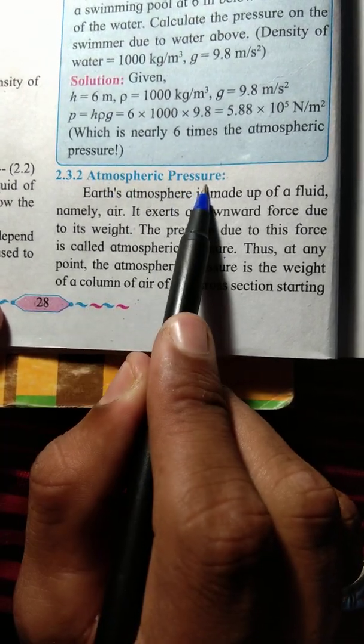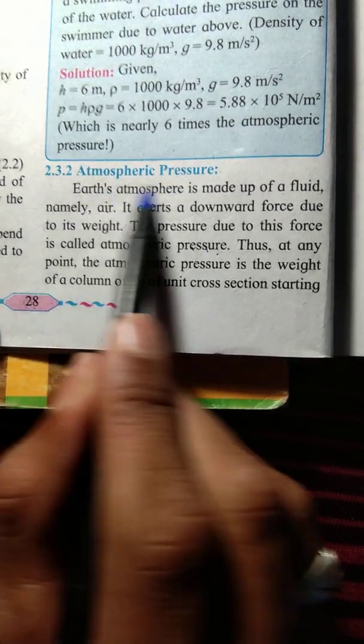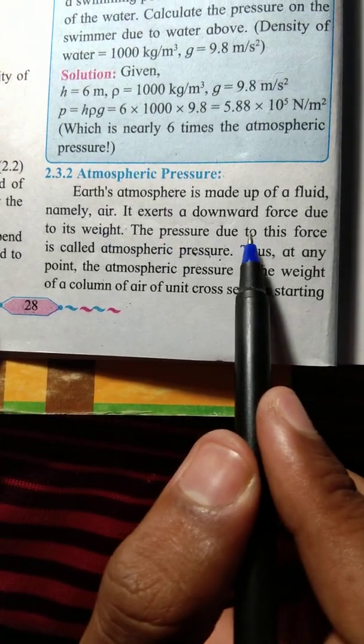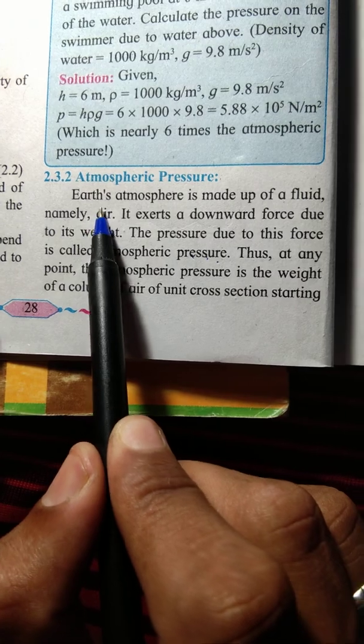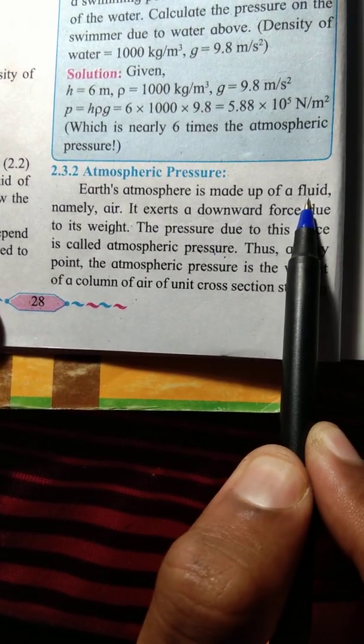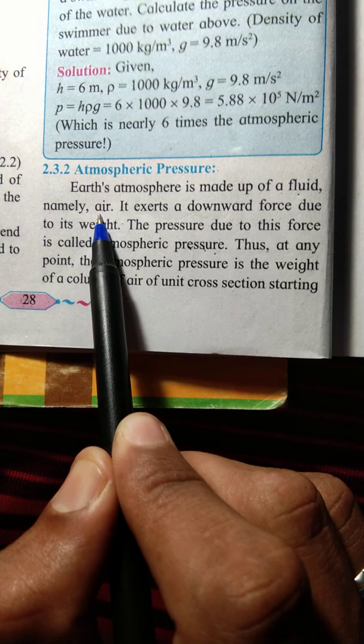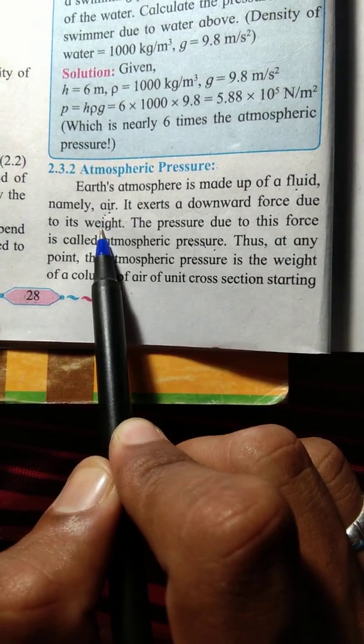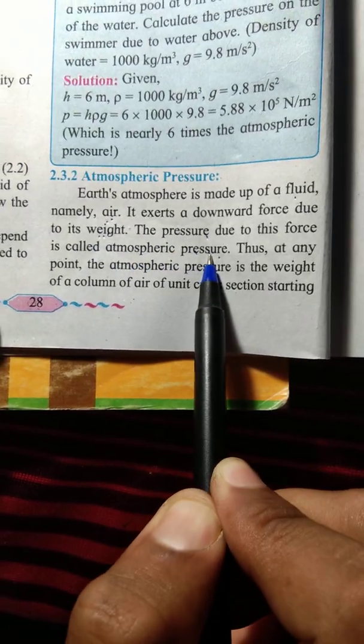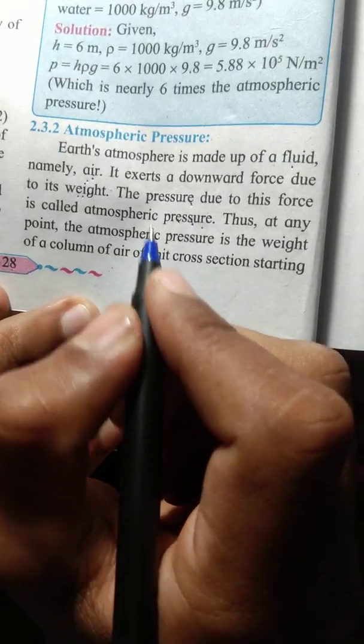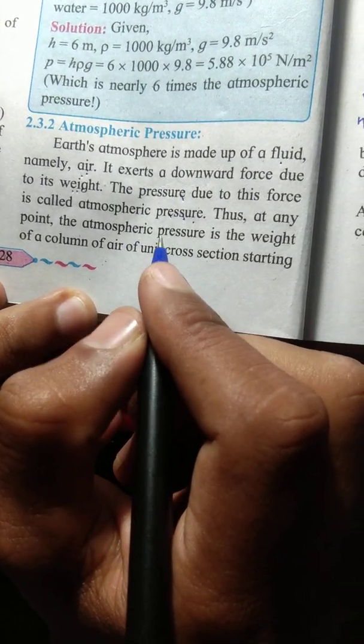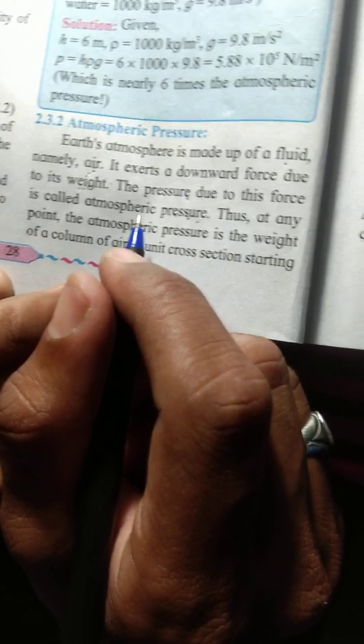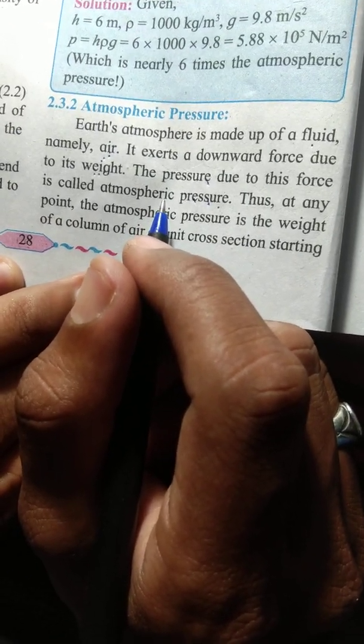Next point is atmospheric pressure. Earth's atmosphere is made up of fluid - that is air. Air has weight. And that weight exerts pressure. That is called as atmospheric pressure. This is the first part of atmospheric pressure topic. We'll cover the rest in the next video. Please like and subscribe.